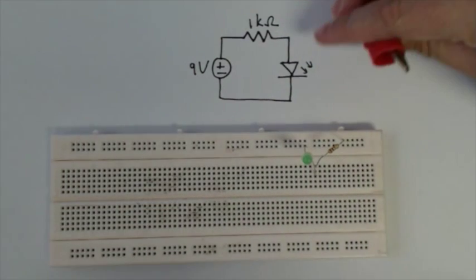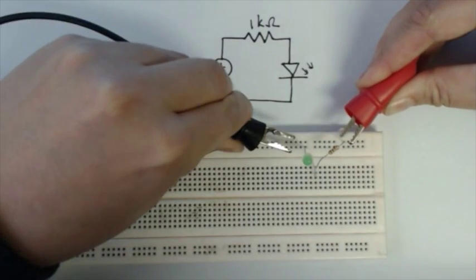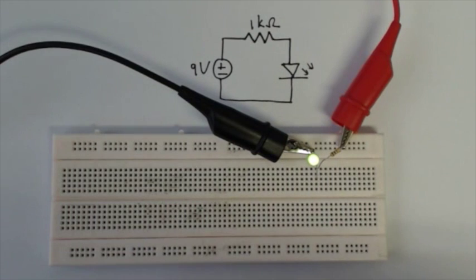Then connecting the power, remember red is positive and black is negative. If we connect the power up, the LED goes on. You can see that we connected it correctly.